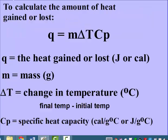Using specific heat, we can calculate the mass, the change in temperature, or the heat gained or lost using this equation: Q equals m times delta T times Cp. Q is the heat gained or lost in joules or calories. M is your mass in grams. Delta T is the change in temperature in degrees Celsius—final temperature minus initial temperature. And Cp is your specific heat capacity with units of calories per gram degree Celsius or joules per gram degree Celsius.